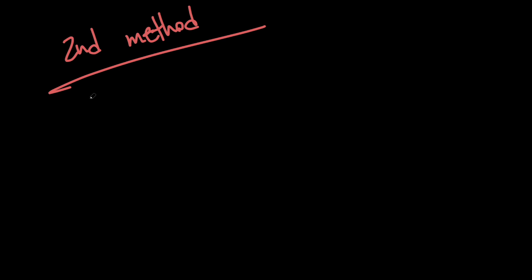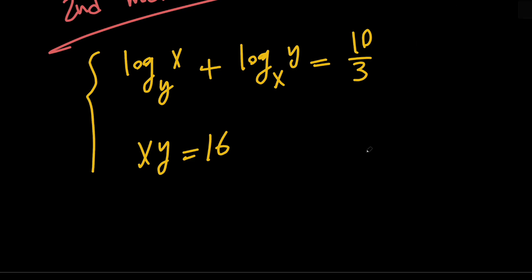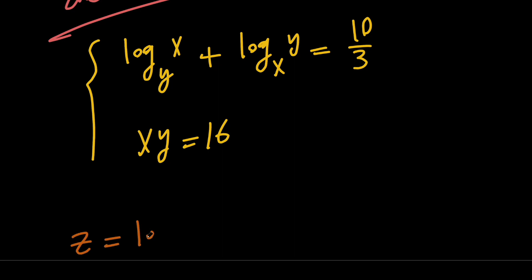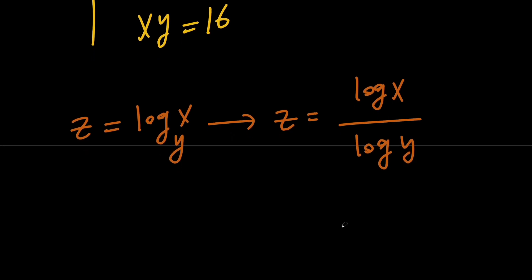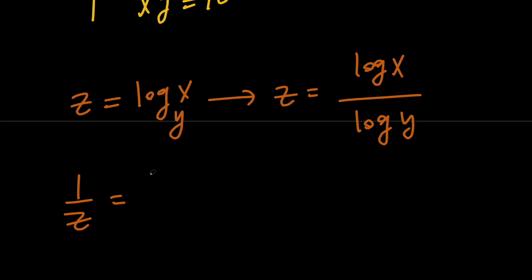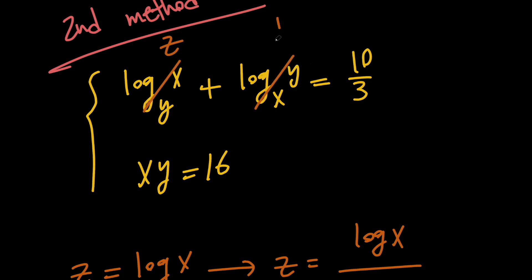Now let's go ahead and talk about the second method. Let me rewrite the problem again: log x with base y plus log y with base x equals 10 thirds, and x times y equals 16. In the second method, let's use the substitution method. Let's say that z equals log x with base y. By using the change of base formula, z equals log x over log y, and that means the reciprocal of z equals log y over log x. By the change of base formula, this equals log y with base x. So if we replace that with z, it becomes 1 over z, meaning z plus 1 over z equals 10 thirds.